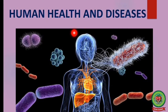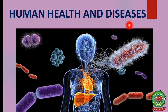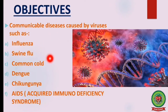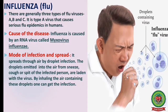Hello children, welcome to biology class. This video is in continuity with the previous video of the chapter 'Human Health and Diseases.' The various objectives we are going to cover in this video are communicable diseases caused by viruses such as influenza, swine flu, common cold, dengue, chikungunya, and AIDS — that is, Acquired Immunodeficiency Syndrome.